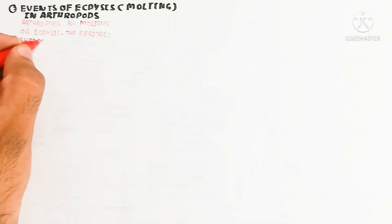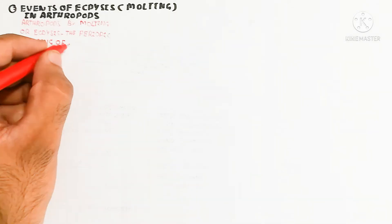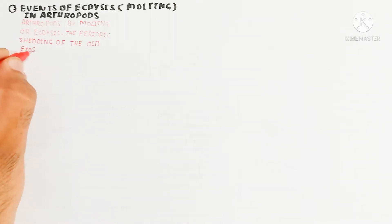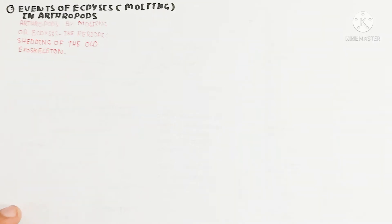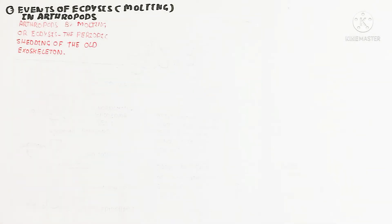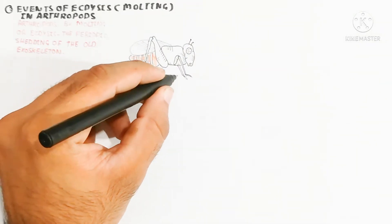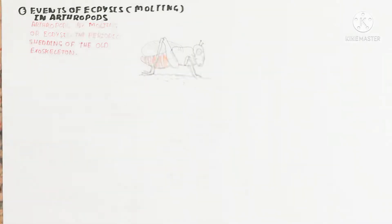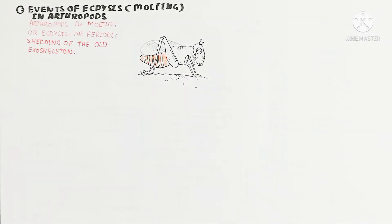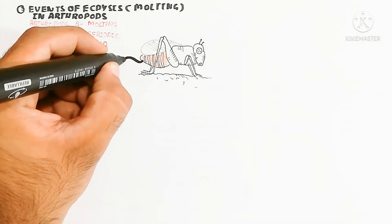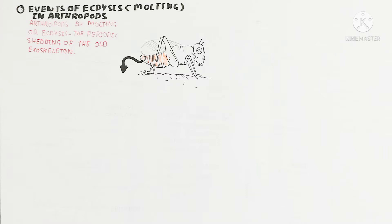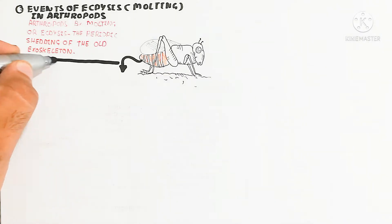So let's begin to understand all the steps of ecdysis as well as the endocrinology of ecdysis with respect to hormone production. This hormone production will lead to control ecdysis as well as the periodically shedding due to hormonal activity. So here is the insect — insects basically contain an exoskeleton, which we will discuss here.